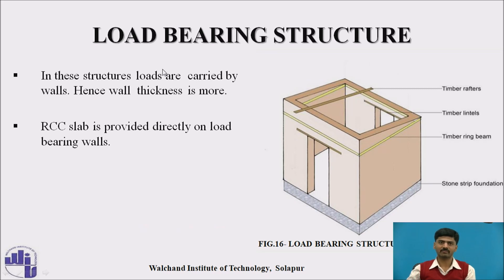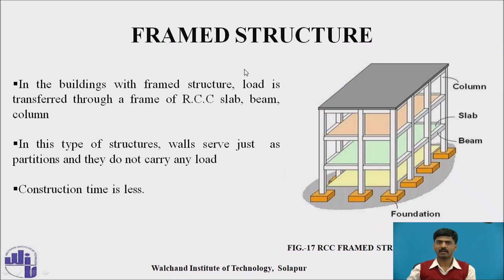There are two types of structures. One is load bearing structure, where loads are carried by walls. Whatever loads come — dead load or live load — they are resisted by the external walls, and RCC slab or AC sheets are provided directly on such walls. Frame structure is totally based on the junction of RCC — slab, beam, and columns — where walls serve only as partitions. Loads travel from slab to beam, beam to column, column to footing. Construction time is less but it is costlier compared to load bearing.